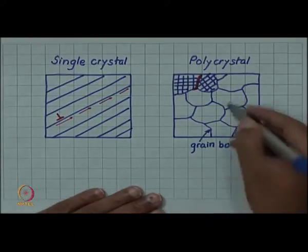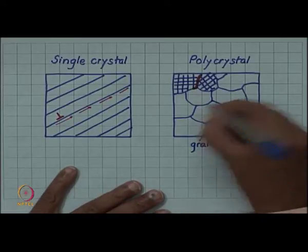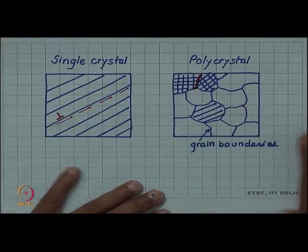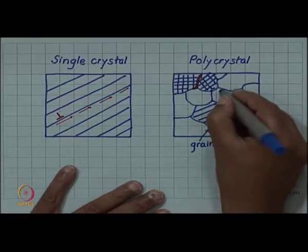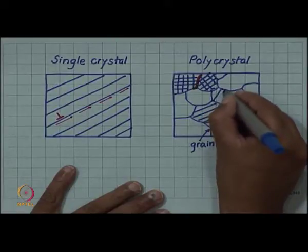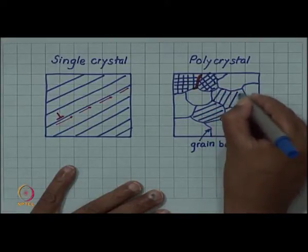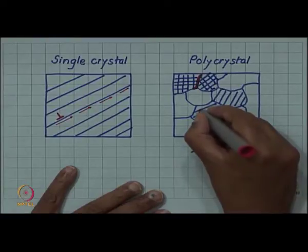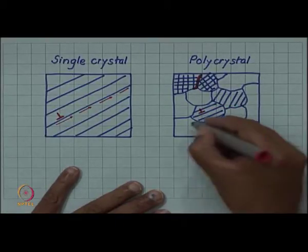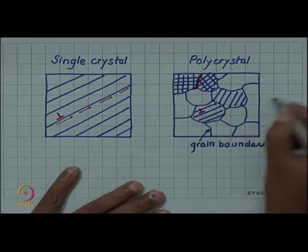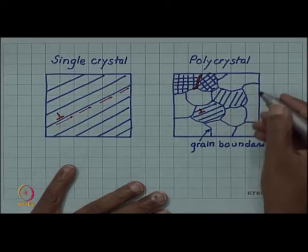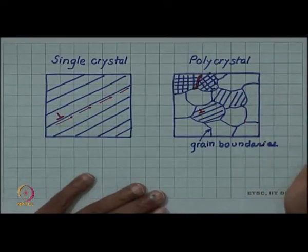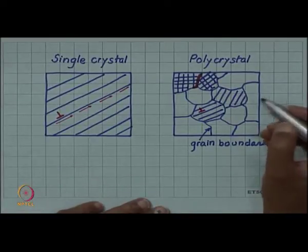But if you look at the same situation in polycrystal, then if I draw a particular set of slip plane, the slip plane continuity is broken at the grain boundary because the orientation of the plane is different. So a slip plane will not continue into another grain. So if I now have a dislocation line here which is moving, it has to necessarily stop at the grain boundary. So for deformation to continue, another dislocation has to be activated in the other grain, which may not be so favorably oriented.